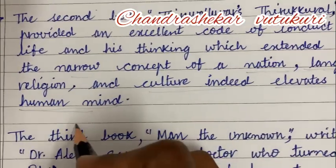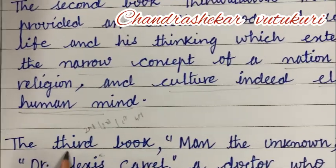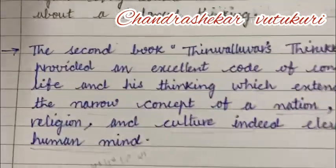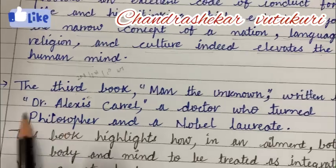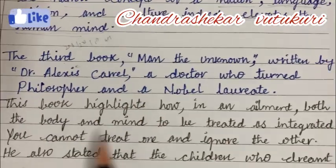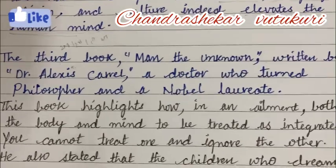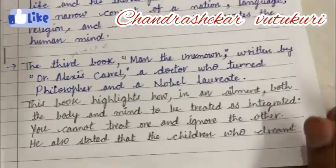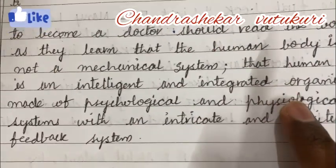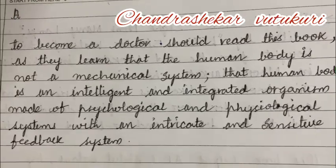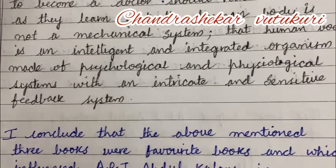For the third book, many students use numerical values like '2nd' and '3rd.' Please do not use numerical values in English — you are supposed to write T-H-I-R-D, 'third,' and 'second.' The third book title is highlighted in inverted commas, the author's name also kept in inverted commas, followed by a comma, and then what made him influenced by this book written in another color pen. There is no issue writing in two sets of pens — it attracts the eye of the evaluator.